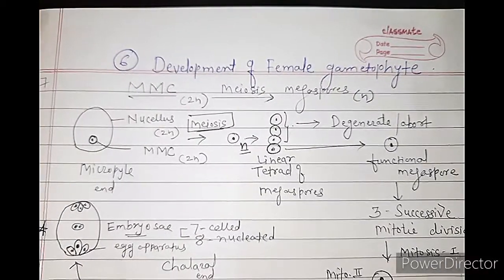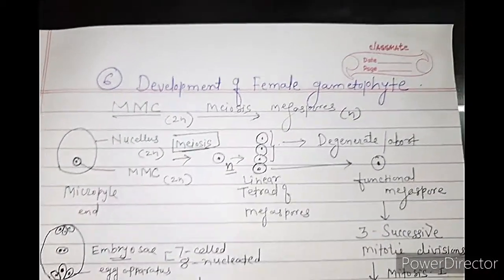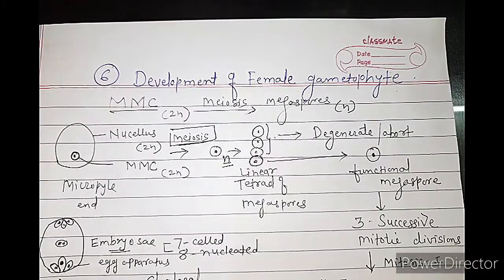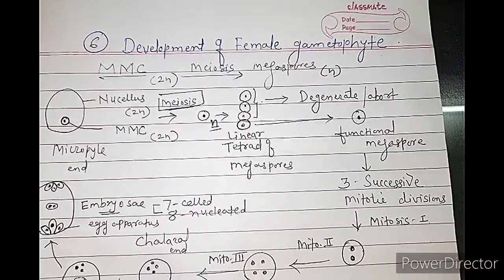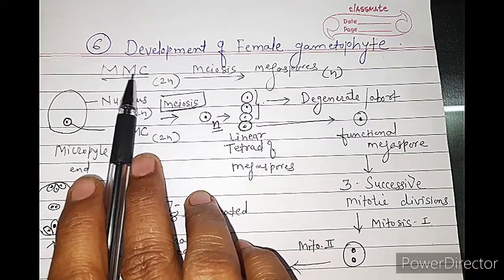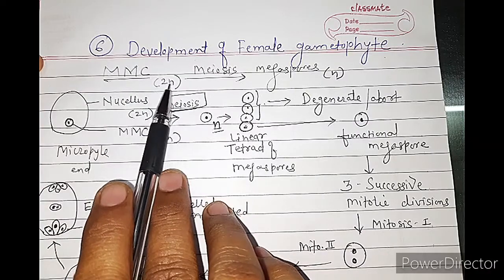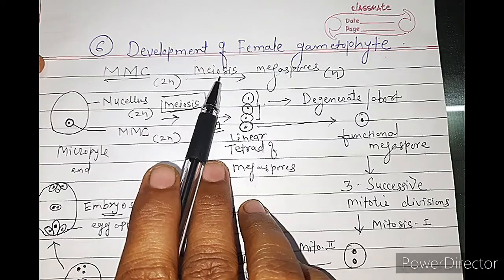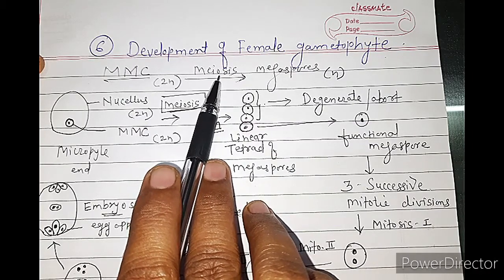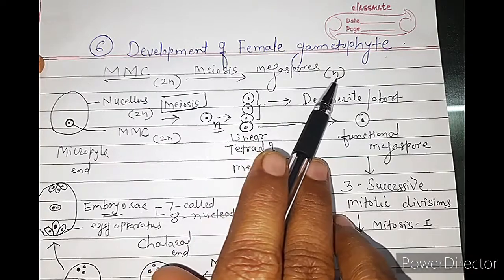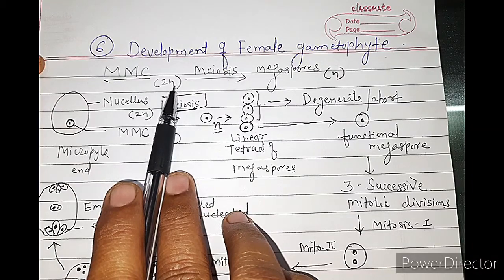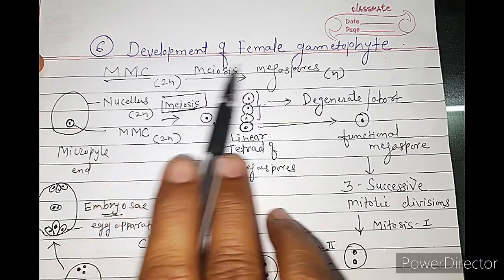Welcome students. In this period we will study about the development of female gametophyte. In the last period I told you that the megaspore mother cell, which is formed in the nucellus, is diploid in nature and undergoes meiosis — a reductional cell division — producing haploid megaspores having n number of chromosomes, while diploid means having 2n, that is 2 sets of chromosomes.